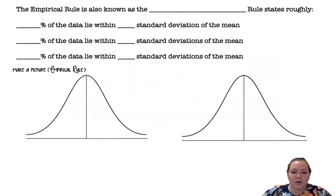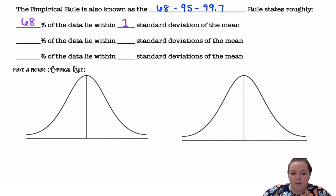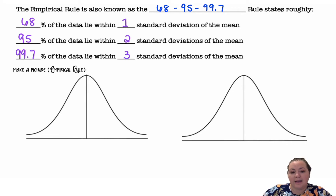The empirical rule is also known as the 68-95-99.7 rule. It states that roughly 68% of the data lie within one standard deviation from the mean, 95% lie within two standard deviations of the mean, and 99.7% of the data lie within three standard deviations of the mean.